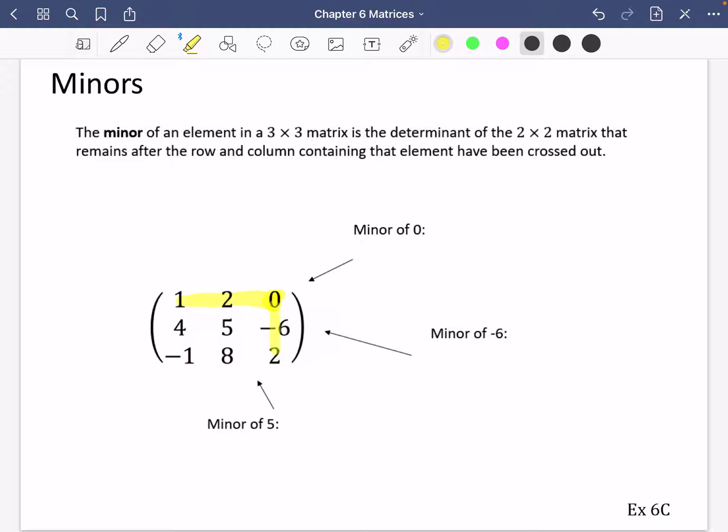So the minor of this zero term here is going to be 4 times 8 minus -1 times 5, so that's just going to be 32 plus 5, which is 37.